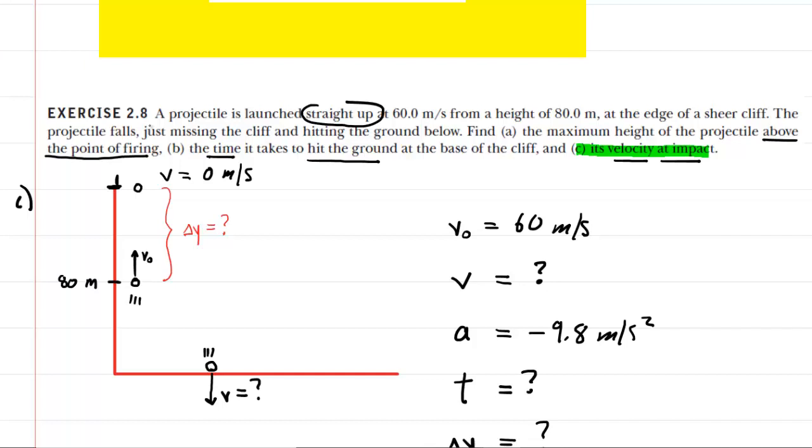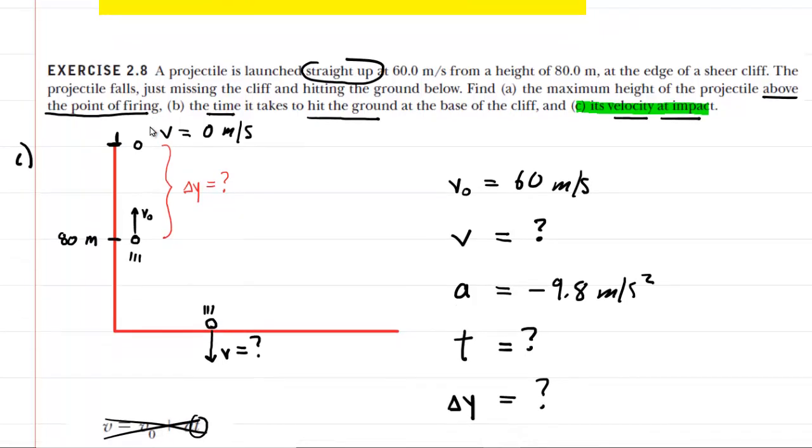But let's take a look at the delta y for part C of the question here, because we actually do know the delta y. And we know it because delta y is the same thing as the final y coordinate minus the initial y coordinate. Well, if you look at the picture, the final y coordinate, when the projectile reaches the ground, is actually 0 meters. And the initial y coordinate, when the projectile is launched, was 80 meters.